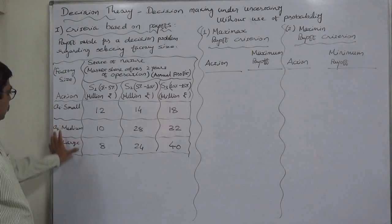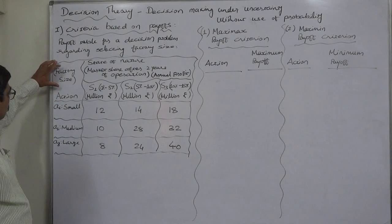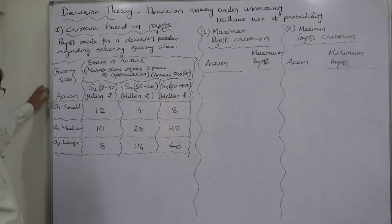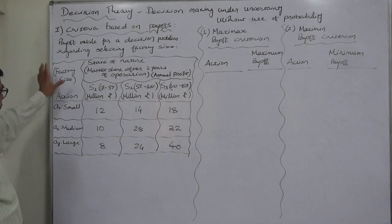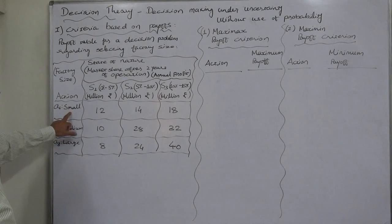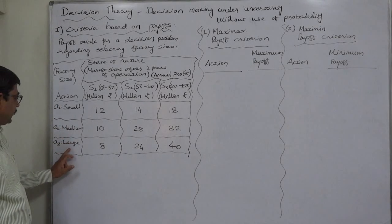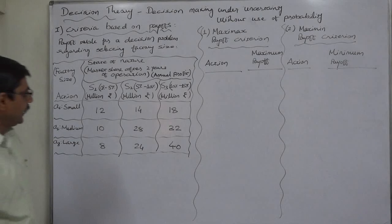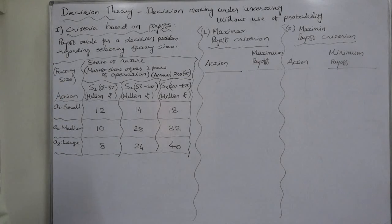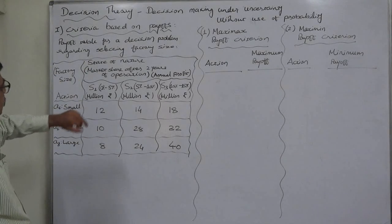There are three alternatives to create: small factory, to create medium factory, and to create large factory. According to the company's expectations and studies, there are three possible states of nature.